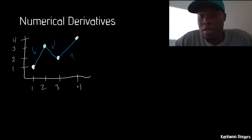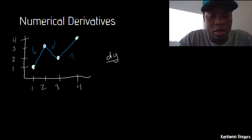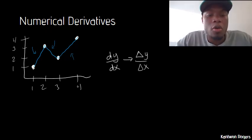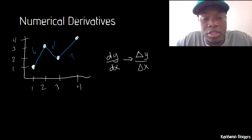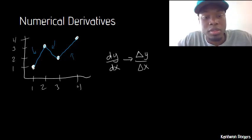In order to do that we can think back to calculus class. We denote a derivative by saying dy over dx, which is also the same thing as saying the change in y over the change in x. So we want to figure out how y is changing with respect to x. There's a function called diff that can help us do this.